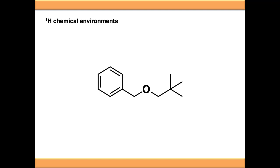If we use this example molecule and want to identify the proton chemical environments in it, we would start at the left-hand side and go 1, 2, 3, 4, 5, and 6. We haven't numbered some of the protons because via planes of symmetry or axes of rotation they're in the same chemical environment as ones already numbered. On the benzene ring, certain positions share environments 2 and 3, and the methyl group protons are all equivalent due to their axis of rotation. We're going to focus on position 4.